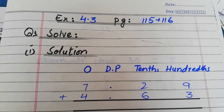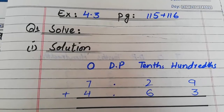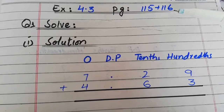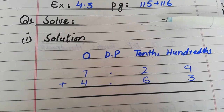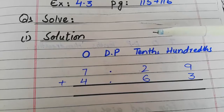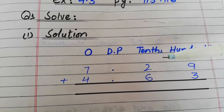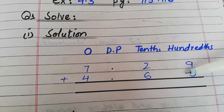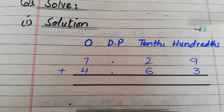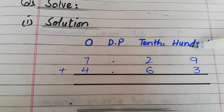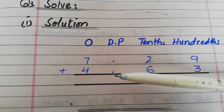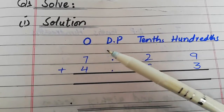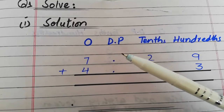Okay, اب ہم start کر رہے ہیں Exercise 4.3, Page 115 and 116۔ آپ نے first line میں یہ لکھنا ہے، پھر ایک line چھوڑ کے question number 1 solve لکھنا ہے، پھر ایک line چھوڑ کے solution لکھنا ہے۔ اور جو question ملا ہے وہ لکھیں گے: 7.29 and 4.63۔ یہاں پہ پہلے place values لکھیں گے۔